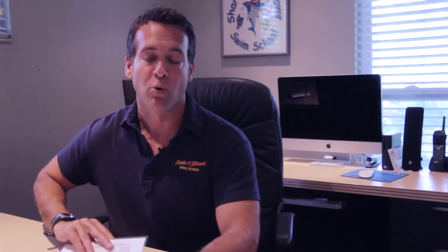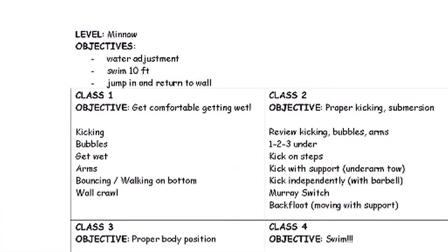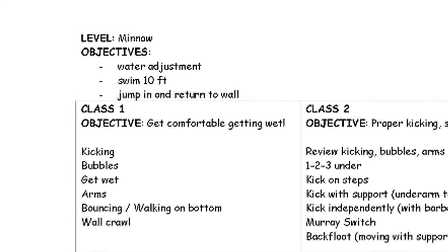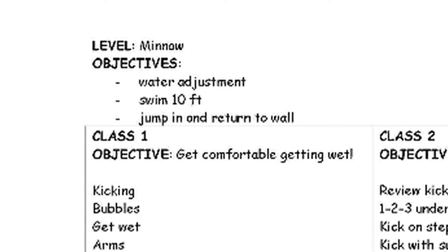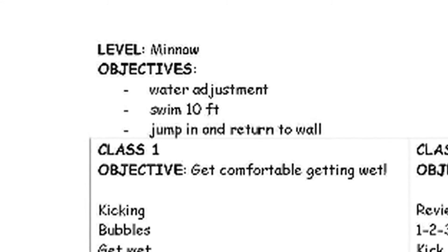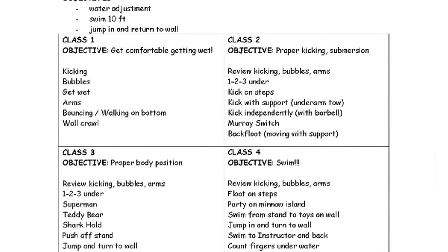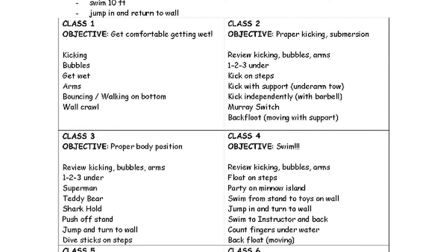What I'd like to talk about is how to read these teaching sheets. Each class will have a class objective and a course objective. The course objective is what they will need to know for that particular course. For instance, the beginner minnow level class — the course objective is to get them to swim ten feet, jump in, and get back to the wall. So when you're teaching to the course objectives, by knowing that, you know exactly how to pace the class.